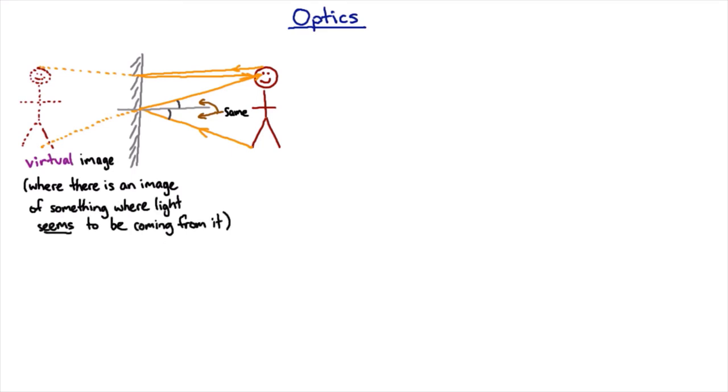Now if you want to find out exactly where that image is for a flat mirror, you just draw those light rays like that and do some geometry. We note that the angle over here is exactly the same as the angle over here because that's just a straight line. Therefore we can tell that this triangle here